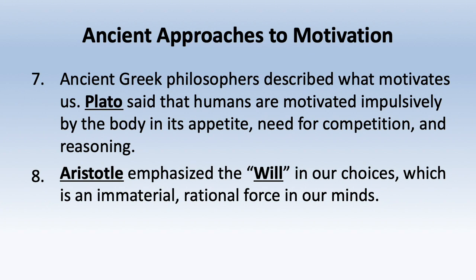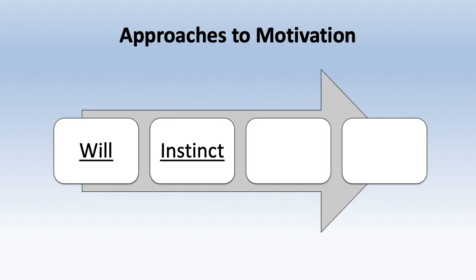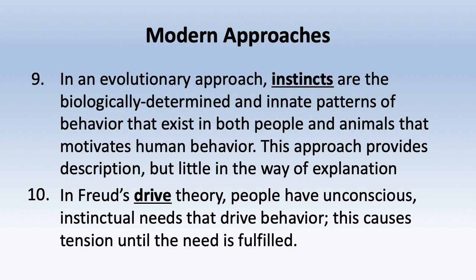After that came the idea that we're motivated by basic instincts. From an evolutionary perspective, instincts are biologically determined, innate patterns of behavior that exist in people and animals. For example, sex might be considered a basic instinct. A problem with the instinct approach is it doesn't explain why people make choices different from what might be expected — it assumes humans are robots predetermined by genes or chemistry.